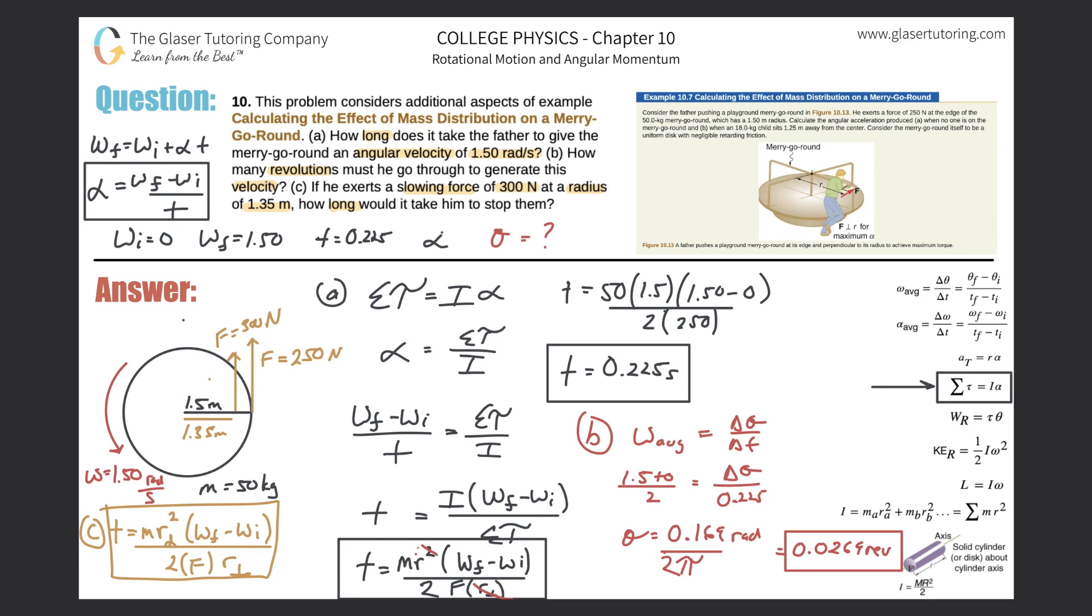And then I'll calculate it on my calculator. So the mass of the disc hasn't changed. It's 50. So 50 times the radius of the disc, which was 1.5, and that's squared then multiplied by the change in velocity. So the final velocity is zero minus the initial, so it's multiplied by 1.5. Then divide this now by two times the force that's being applied, which is 300, then multiply it by that perpendicular lever arm of 1.35.